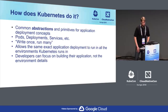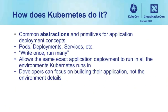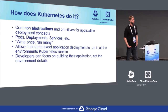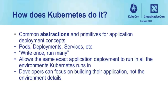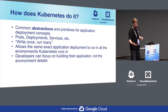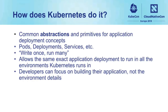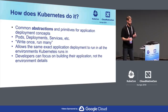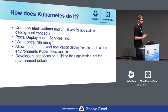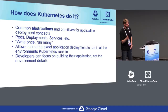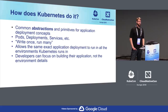How did Kubernetes enable this incredibly portable application deployment ability? What it did is it defined a common set of abstractions and primitives to capture application deployment concepts — things like pods, services, and deployments. A pod is a pod is a pod anywhere you go. If you deploy to one of the cloud providers, you have the same expectation that your app is going to run the same way. This brings up 'write once, run many' — you write a single manifest, a single YAML file, unchanged, and it should run anywhere Kubernetes runs. That gives developers freedom to focus only on their application.